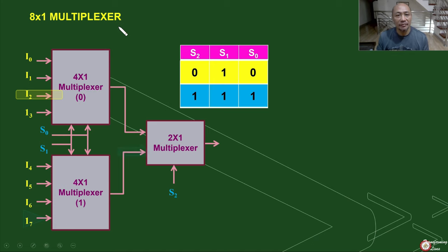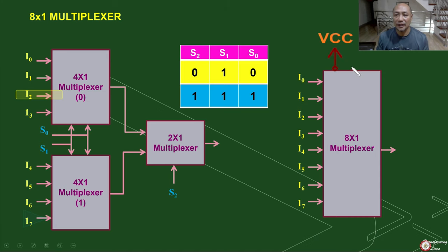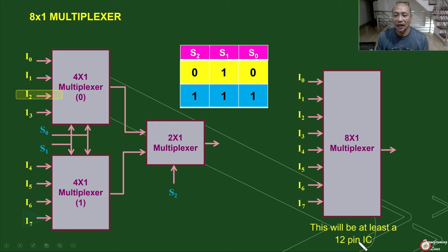An 8-by-1 multiplexer has 8 inputs, I0 to I7, and 1 output, making the number of pins required equivalent to 9. We also need to add our power supply — VCC and ground — making it 9 plus 2, equivalent to 11. We'd therefore need an integrated circuit with at least 12 pins.